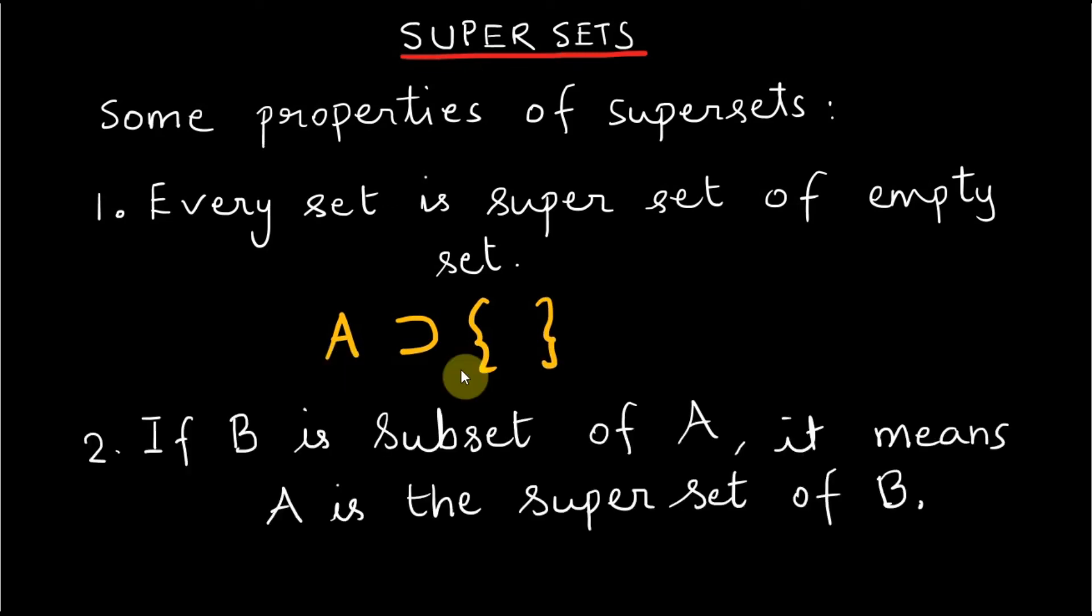If B is a subset of A, it means that A is a superset of set B. Therefore we can say that the supersets are opposite of subsets. This is the reason their Venn diagram looks similar. However, set description is different.